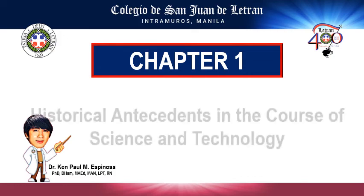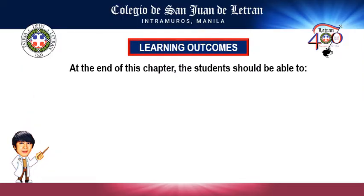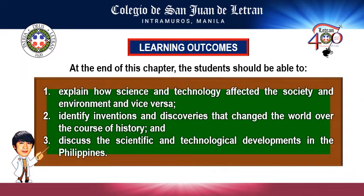Chapter 1: Historical Antecedents in the Course of Science and Technology. The learning outcomes for this chapter are: 1. To explain how science and technology affected society and the environment, and vice versa. 2. Identify the inventions and discoveries that changed the world over the course of history. And 3. Discuss the scientific and technological developments in the Philippines.